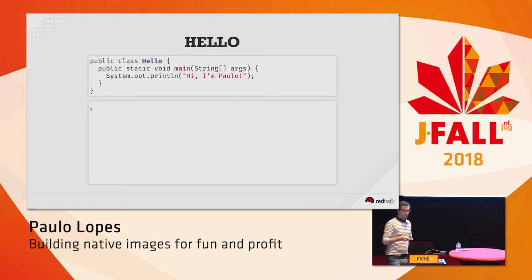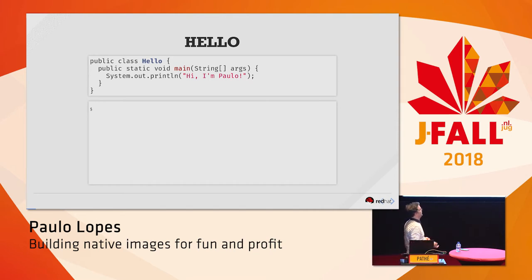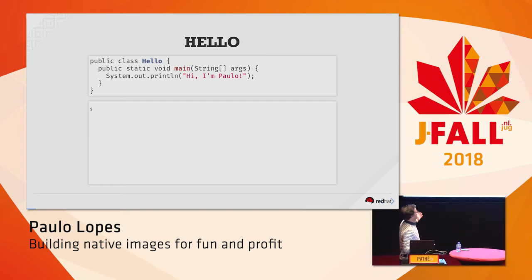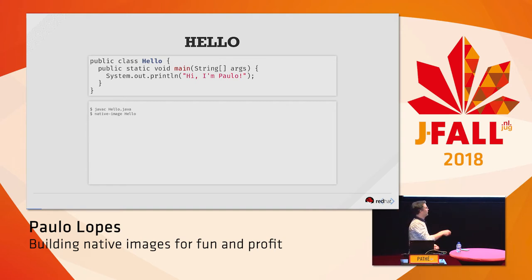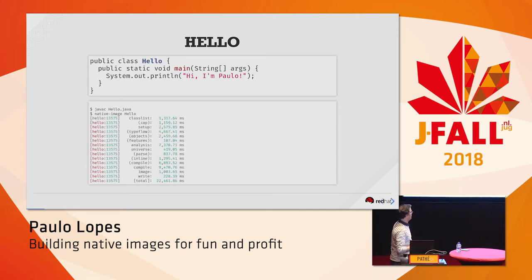So what is a native image? Let's think of a very simple hello world — in this case, just introducing myself. If you think of an application that prints a hello message, you would just compile it. You run javac and there's no output — that's what the compiler does. Then you run the native-image hello command that is bundled with the GraalVM SDK, and you wait a while — like 22 seconds — and you have a binary.